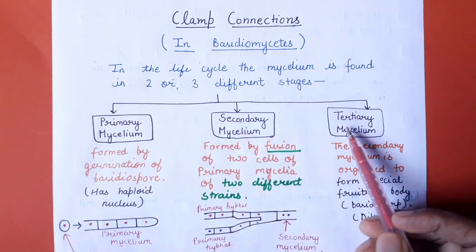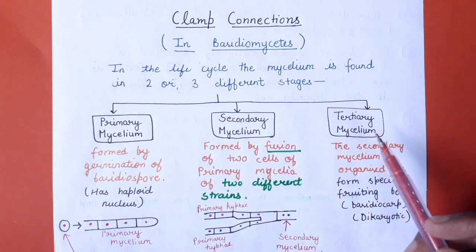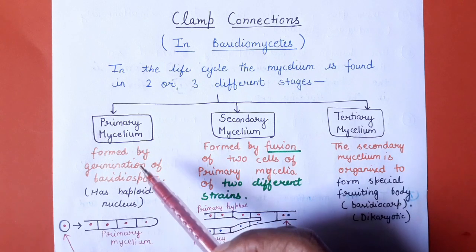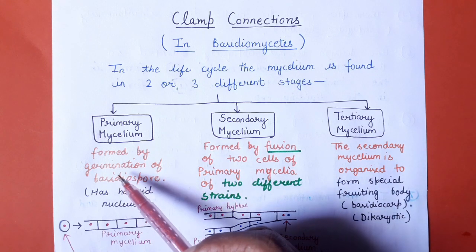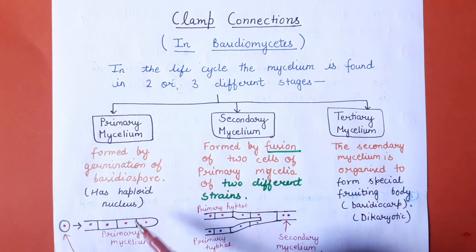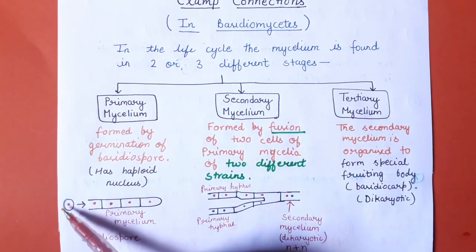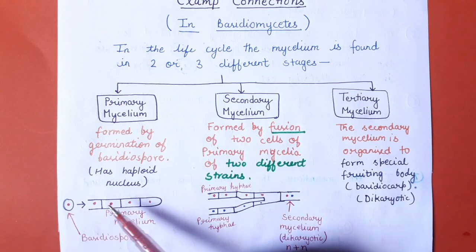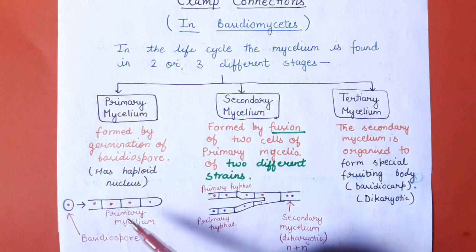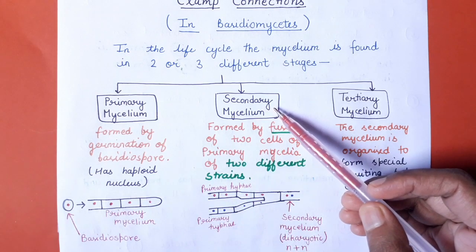In the life cycle of Basidiomycetes, you will see three different types of mycelium: primary mycelium, secondary mycelium, and tertiary mycelium. Primary mycelium is the mycelium which forms from basidiospore germination. This type of mycelium has a haploid nucleus. As shown in the diagram, this is our basidiospore which has germinated and become a mycelium or hyphae, which we call primary hyphae.